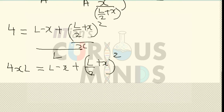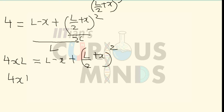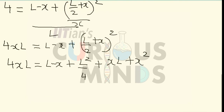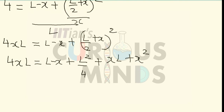Opening the square: 4XL equals (L minus X) plus L²/4 plus XL plus X². Collecting terms gives 4XL equals X² plus L²/4 plus XL plus XL plus X². We need to solve this expression to get the value of L/X.